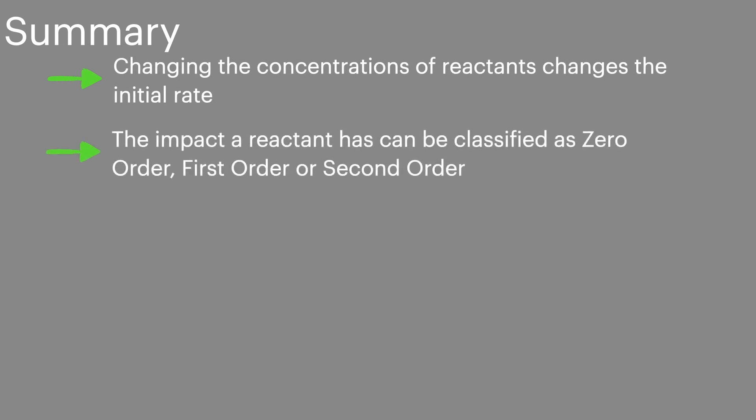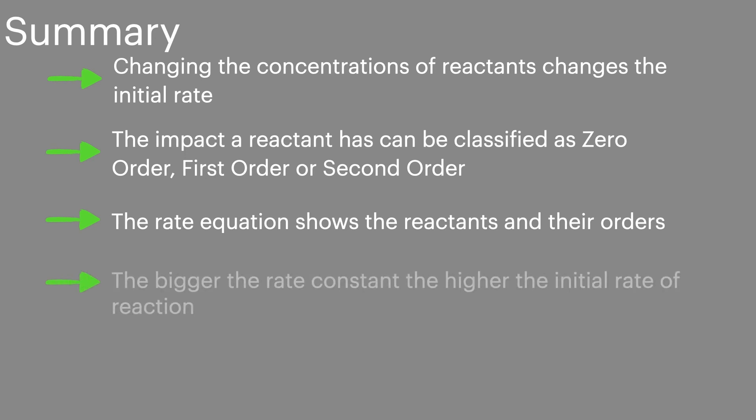So to summarize then, changing the concentration of reactant changes the initial rate. The impact a reactant has can be classified as zero order, first order or second order. The rate equation shows the reactants and their orders. The bigger the rate constant the higher the initial rate of reaction.